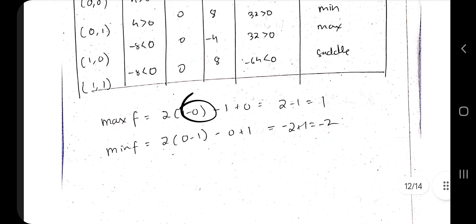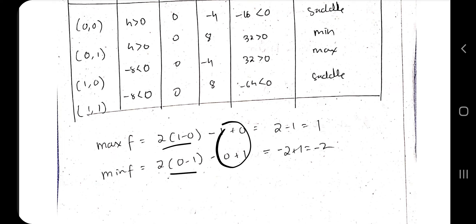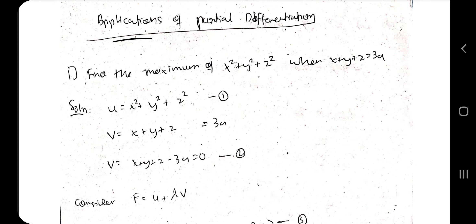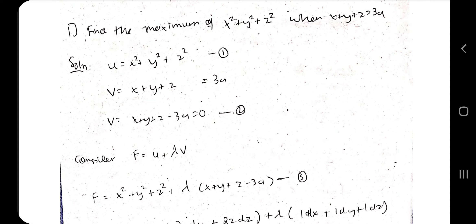Using the values of A, B, and C at each extreme point, you determine whether it is a maximum, minimum, or saddle point. The maximum value is 2(1−0) = 1, wait — actually the minimum value is 2(0−1) − 0 + 1 = −2, and the maximum value is obtained accordingly. So the maximum is 1 and the minimum is −2.